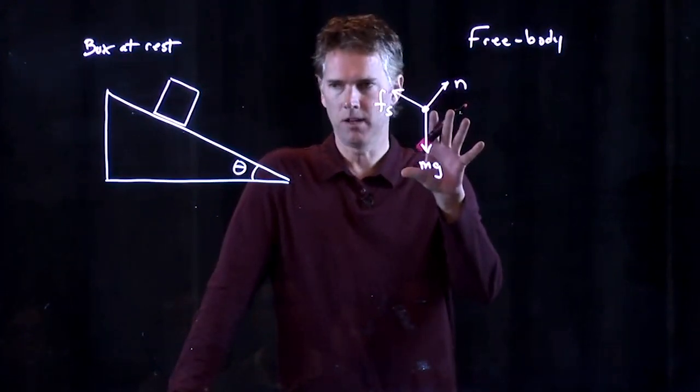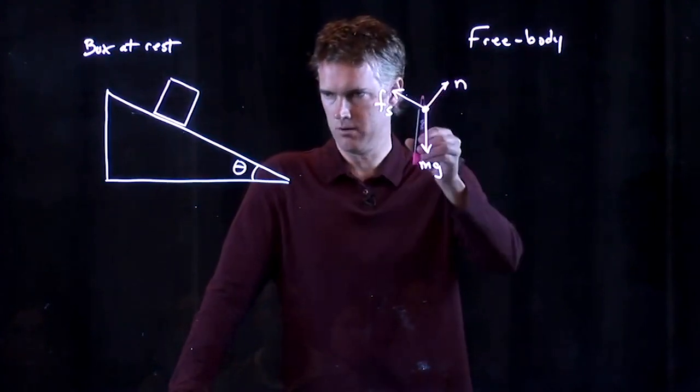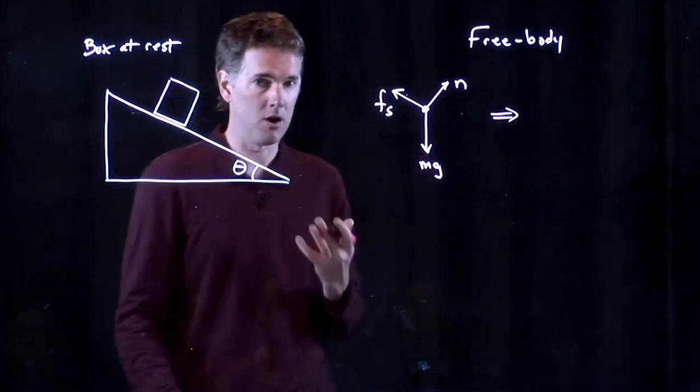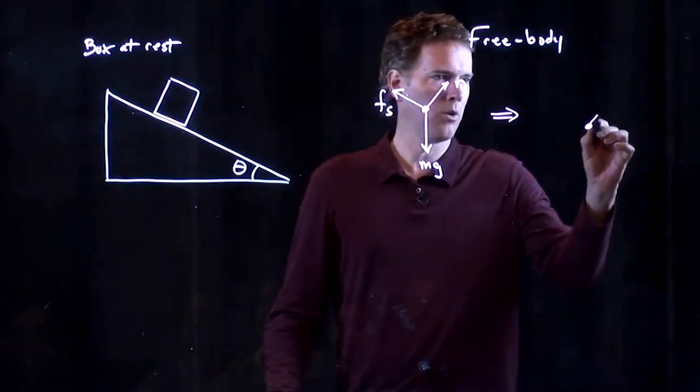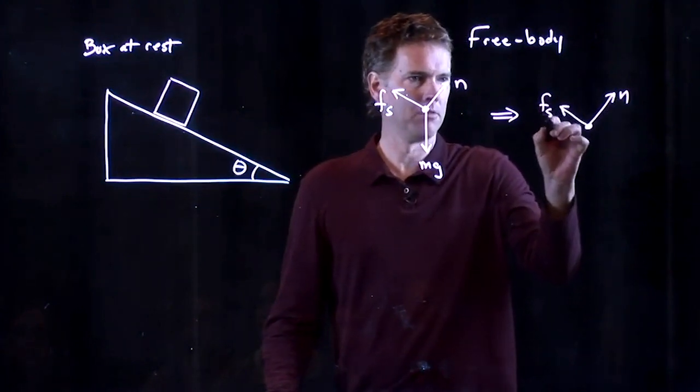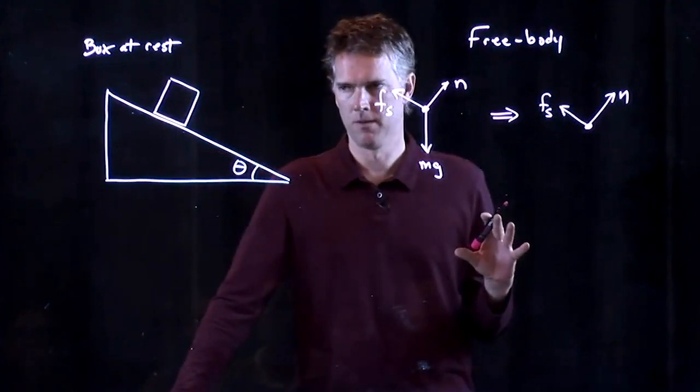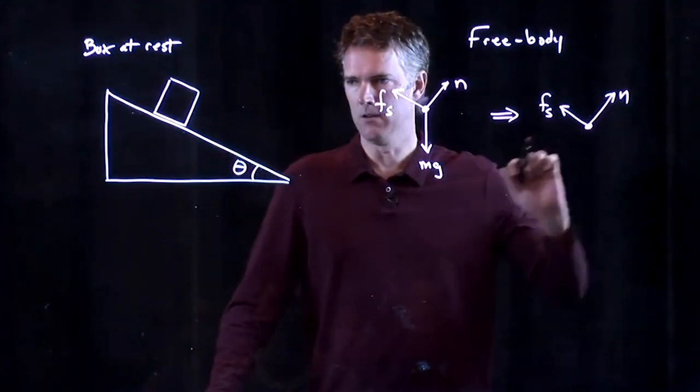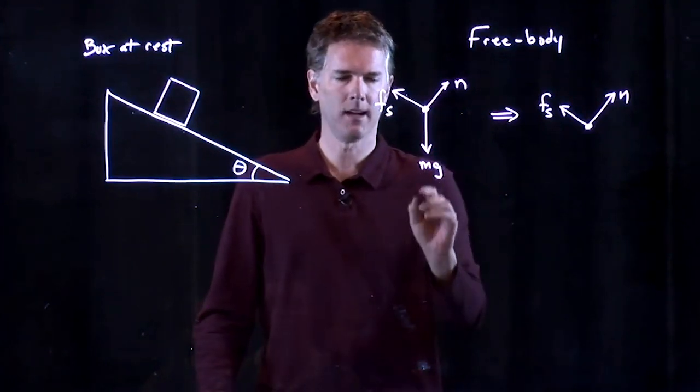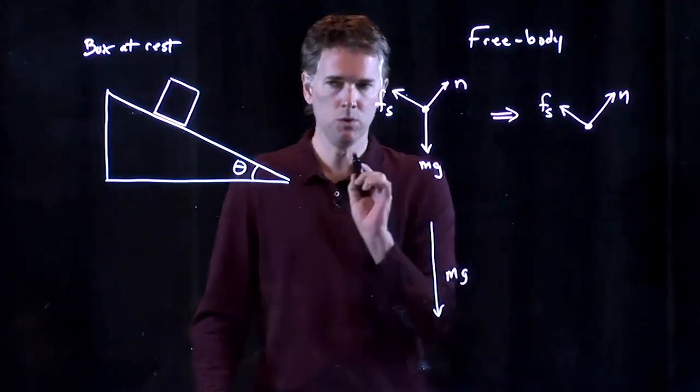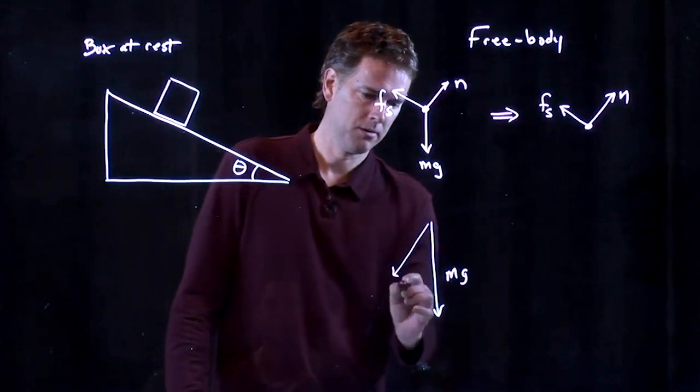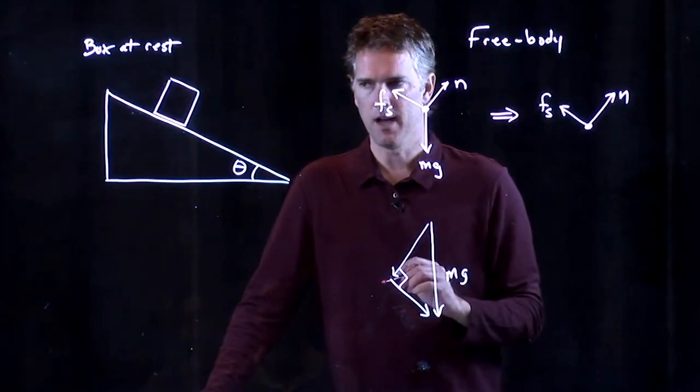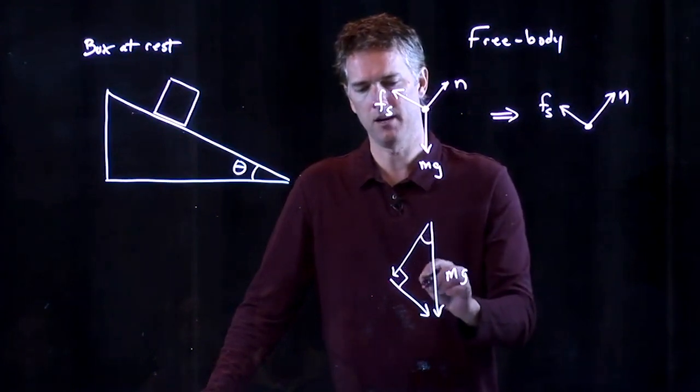Now, this looks nice, except these things are not all at right angles to each other. And that's the problem, right? We would like to redraw this such that they are all at right angles to each other. So, normal force, F sub S, those are at right angles to each other. We can leave them alone. But Mg is the one that's causing the problem. Mg is not aligned to either of those. But I can always break a vector into two components. That one and that one. And this triangle is a right triangle.